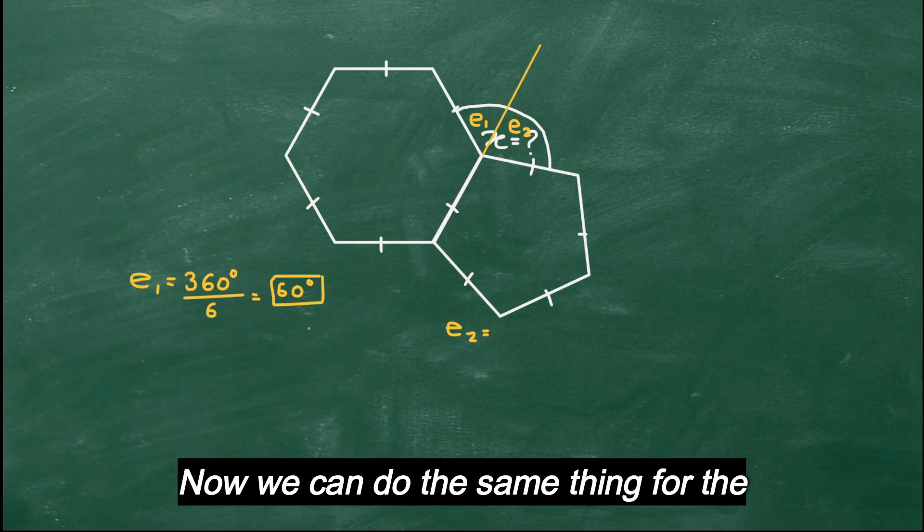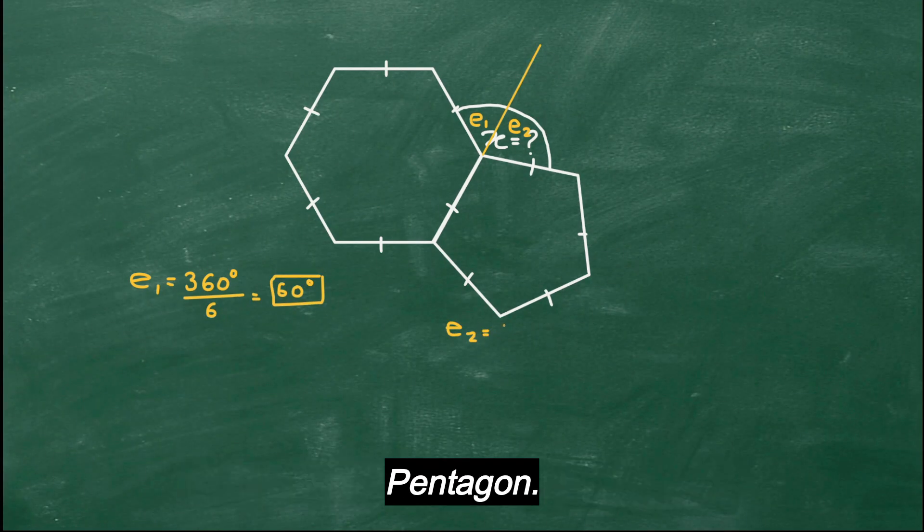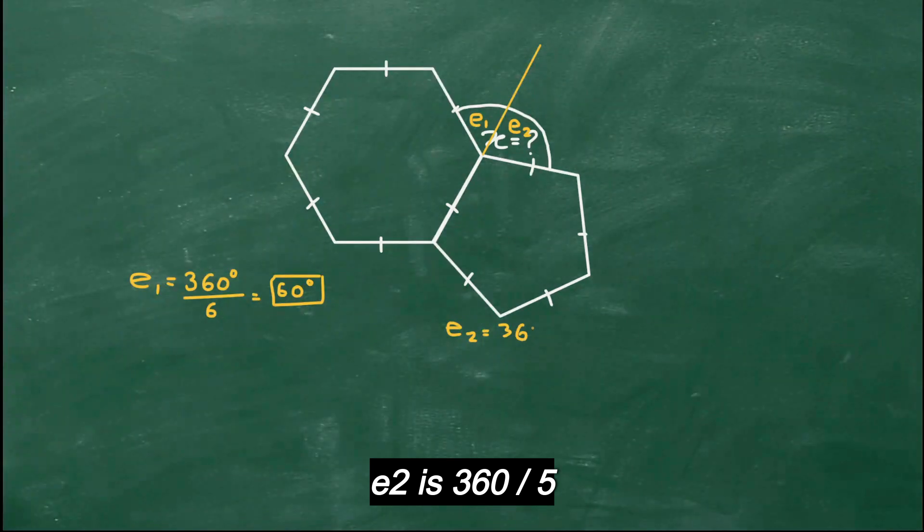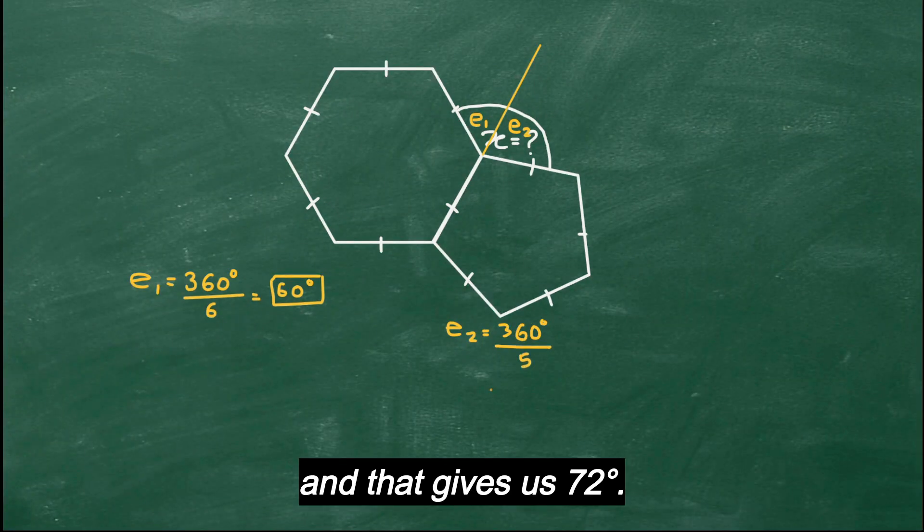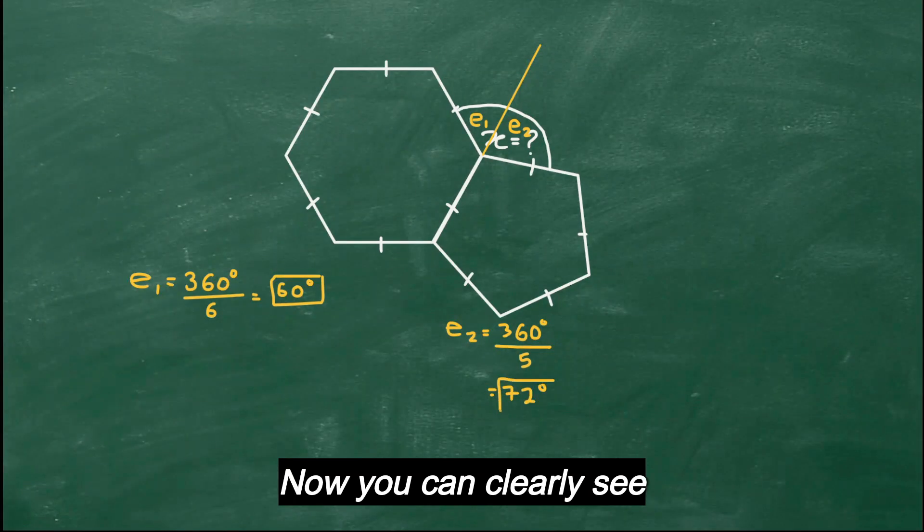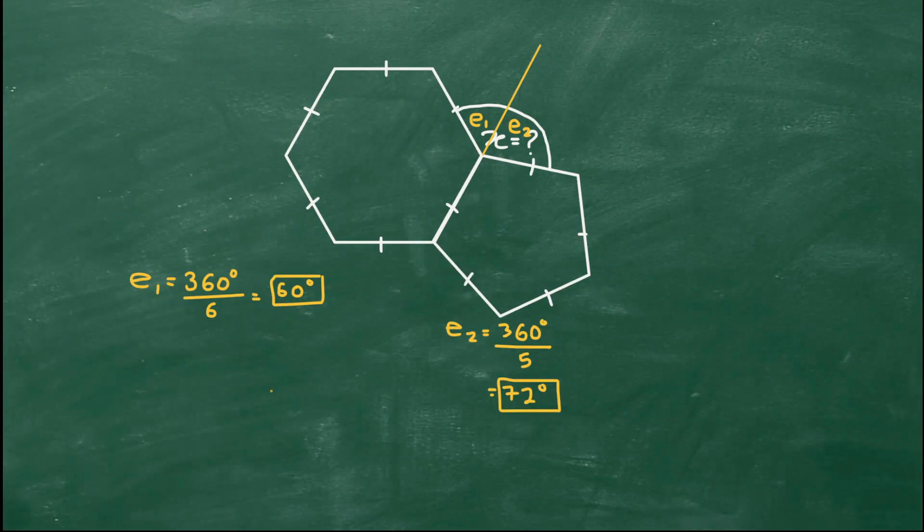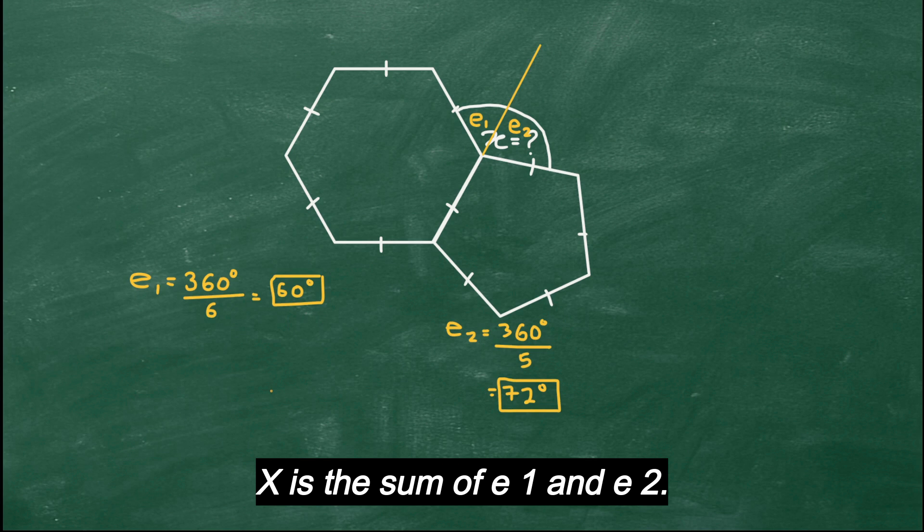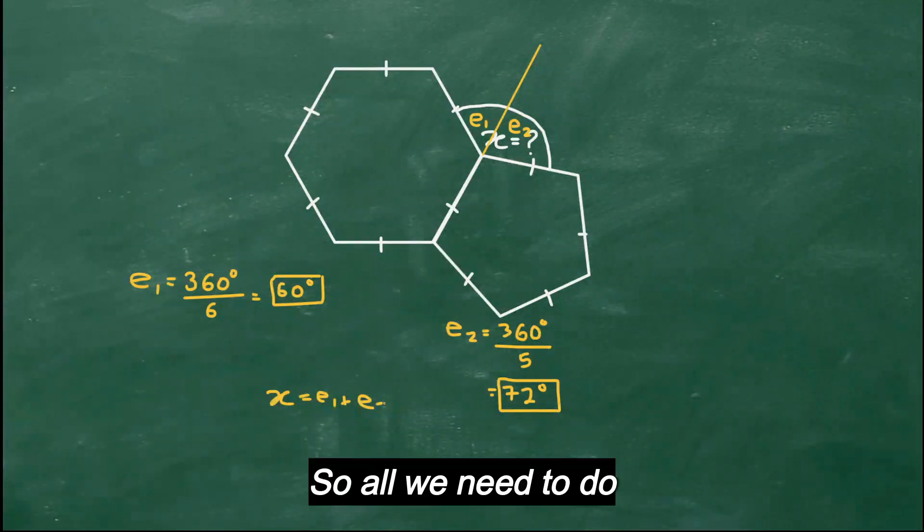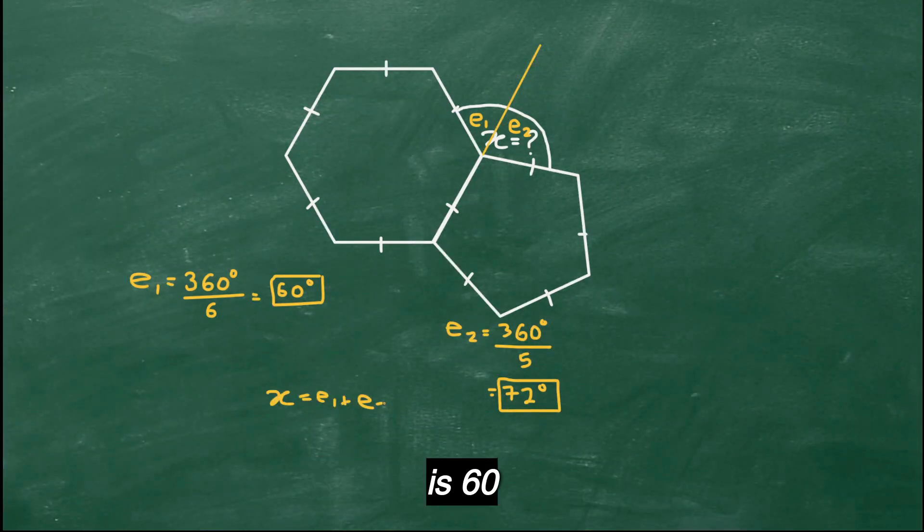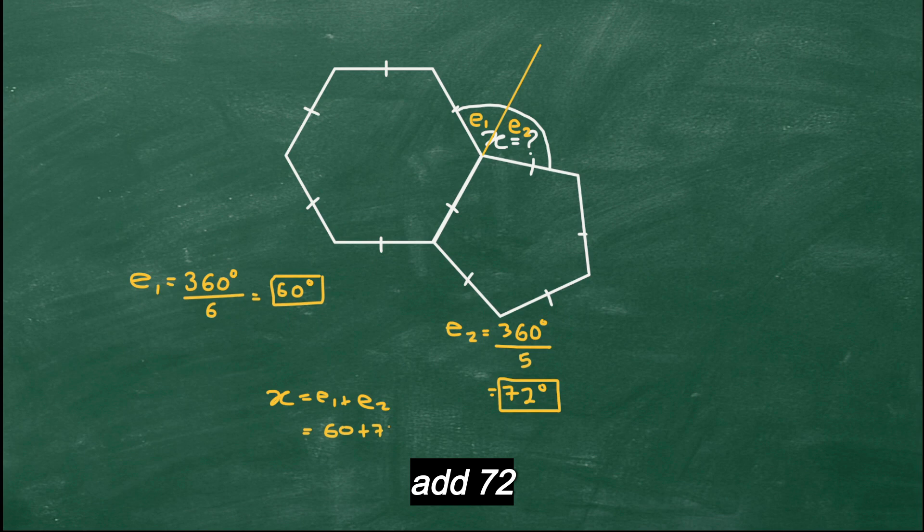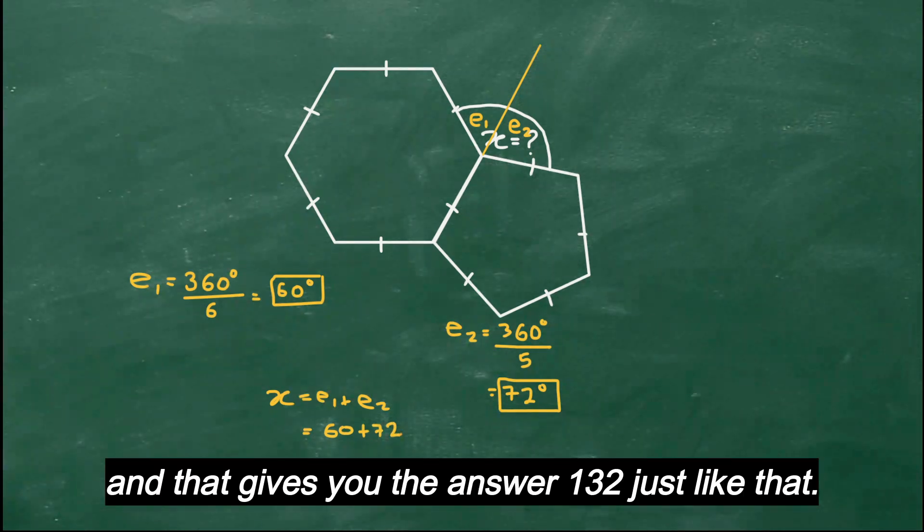And we can do the same thing for the pentagon: e2 is 360 divided by 5, and that gives us 72 degrees. Now you can clearly see x is the sum of e1 add e2. So all we need to do is 60 add 72, and that gives you the answer, 132, just like that. It's much quicker.